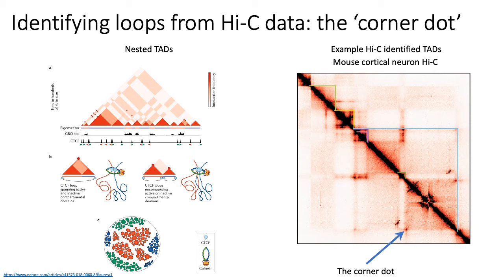Before discussing how cohesin and CTCF induce looping, here is an actual real Hi-C map derived from mouse cortical neurons. On this Hi-C map you can see a couple of block diagonals highlighted with different colored lines, and where the arrow points, you can actually see a very prominent corner dot. Not all TADs on this diagram have a corner dot, but those that do are very prominent and obvious, indicating looping facilitated by cohesin and CTCF.